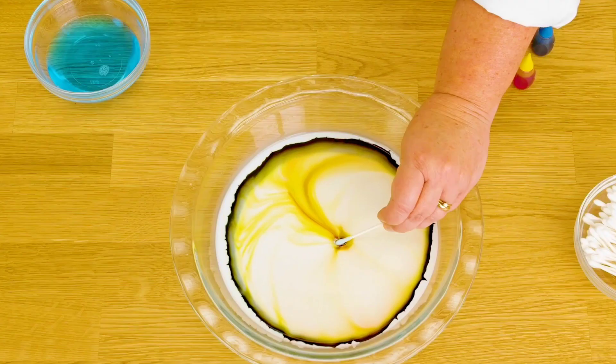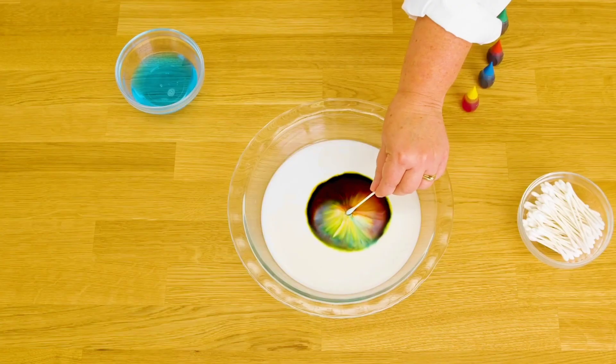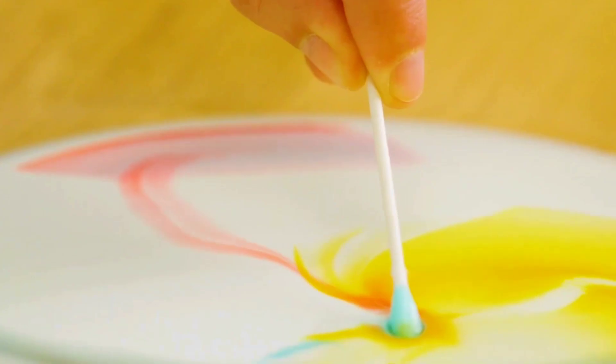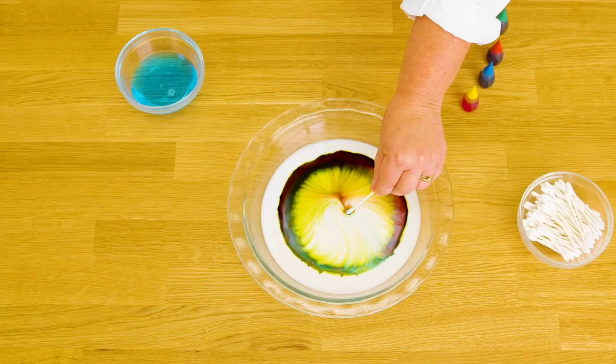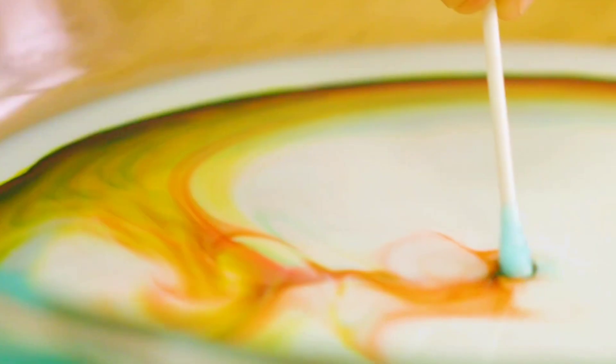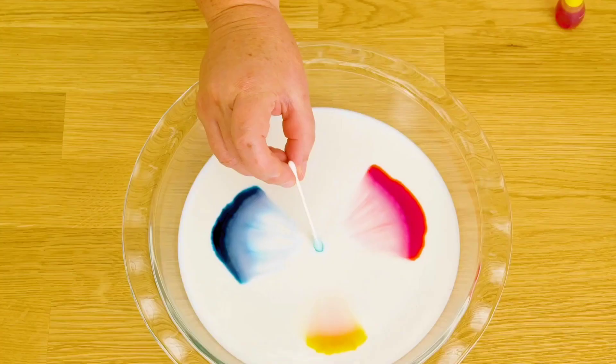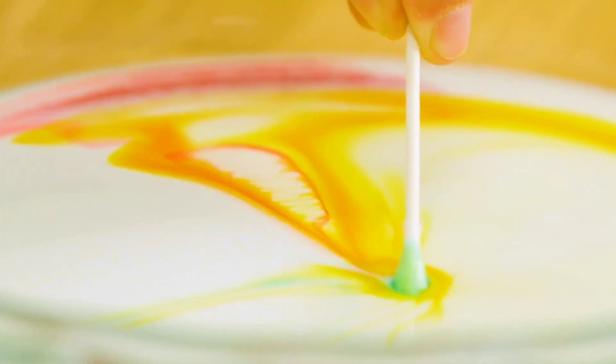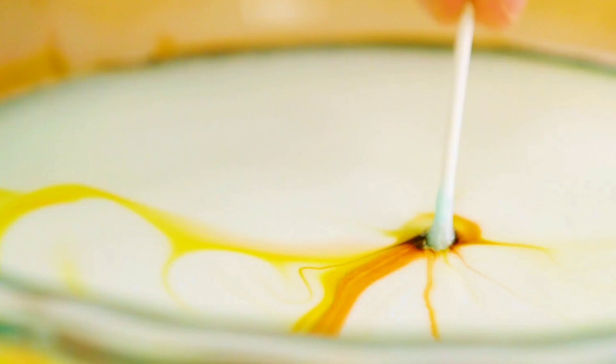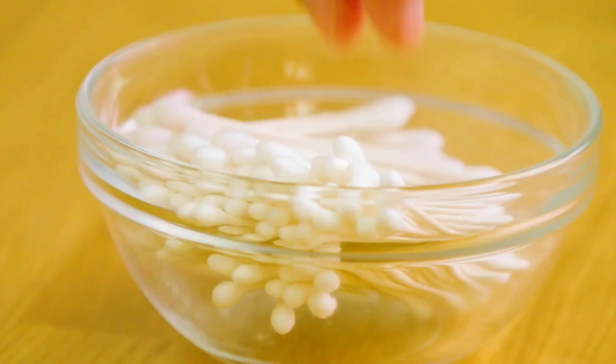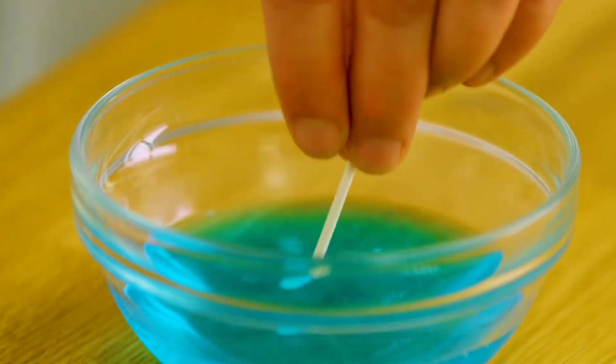Watch in awe as the colors instantly begin to swirl and dance around, creating a beautiful and mesmerizing rainbow effect. This happens because the dish soap disrupts the milk's surface tension, causing the molecules to move and create the colorful display. It's a simple yet enchanting experiment that will leave kids wanting to try it over and over again with different color combinations.